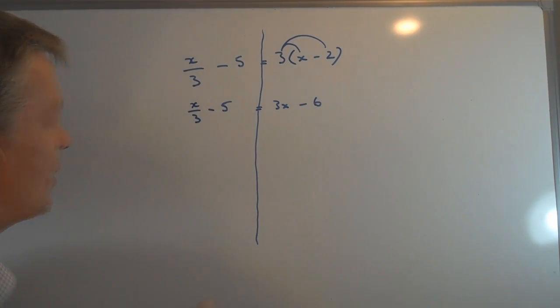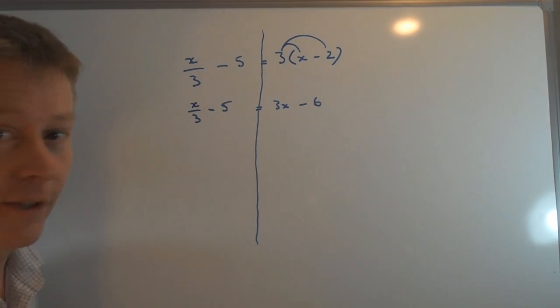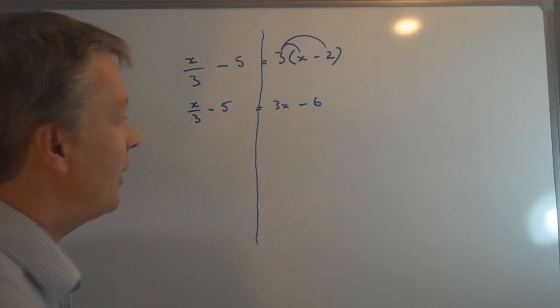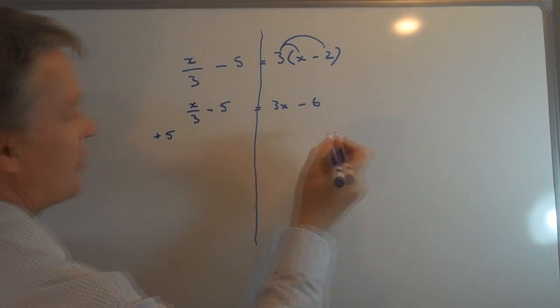What I want to do now is take that minus 5 and put it this side of the equation. The way I'm going to do that is by adding 5 to both sides.